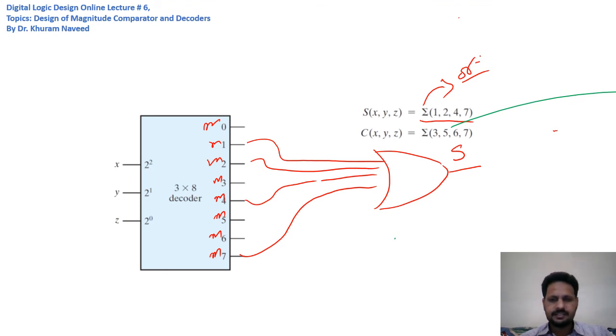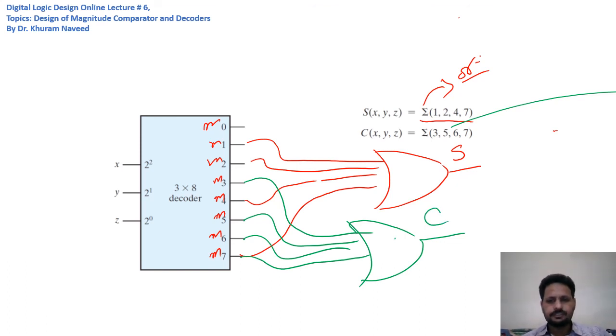The carry can be obtained by combining min terms 3, 5, 6, and 7 in an OR gate. This is 3, 5, 6, and 7. This is how we can implement various boolean functions